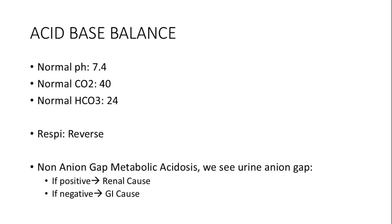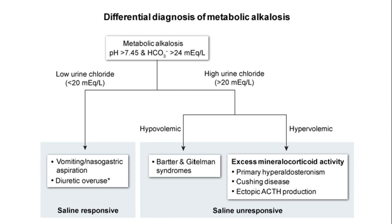Understanding acid-base balance is essential for diagnosing metabolic disorders. A normal pH of 7.4, CO2 of 40, and HCO3 of 24 indicate a balanced state. In cases of non-anion gap metabolic acidosis, urine anion gap analysis helps determine whether the cause is renal or gastrointestinal — a positive urine anion gap indicates renal etiology. For metabolic alkalosis, low urine chloride indicates saline responsiveness often due to vomiting or diuretic overuse, while high urine chloride suggests hypervolemic conditions like excess mineralocorticoid activity, which is not saline-responsive.